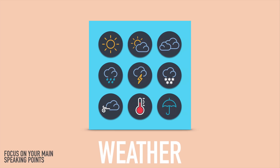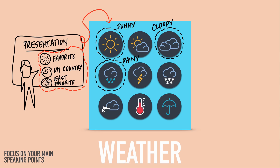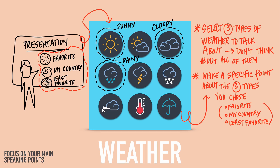For example, if you're giving a presentation about the weather, focus on your main speaking points. A student of mine talking about the weather focused on three: his favorite type of weather, his country's weather, and his least favorite type. Selecting three things helps you not think about every type of weather, only the main points. It also helps him make specific points — why is sunny weather his favorite? Why is it so cloudy in his country? Why is rainy weather his least favorite? Focusing on your main speaking points helps you be more confident.